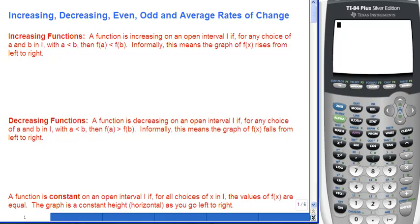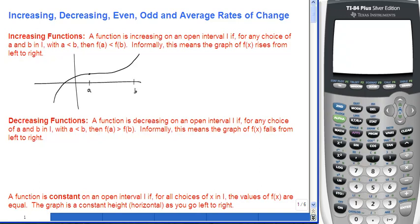Formally, a function is considered increasing on an open interval if for any choice of a and b in that interval, with a being less than b, then f(a) is less than f(b). Informally, that means your graph has to rise up from left to right. The a and b are your x-values, which correspond to points on the graph, and the y-coordinates are f(a) and f(b). Since a is less than b and f(a) is also smaller than f(b), the graph starts smaller and gets bigger as you move to the right.